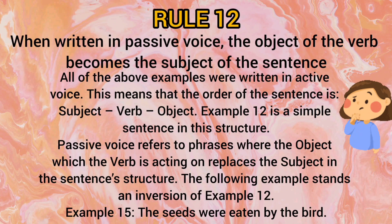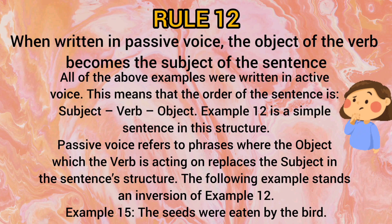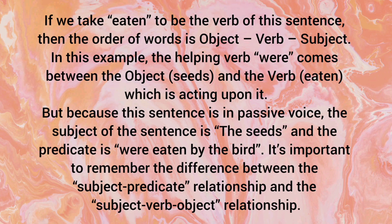Rule number 12: When written in passive voice, the object of the verb becomes the subject of the sentence. Usually, the sentence order is subject, then verb, then object. But in passive voice, the object replaces the subject in the sentence structure. For example, 'The seeds were eaten by the bird.' Here, 'seeds' — the object — comes first, and 'bird' — the subject — comes later. The order becomes object, then verb, then subject — it is reversed.